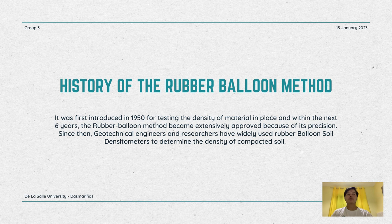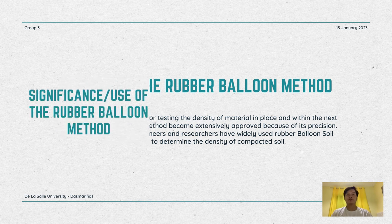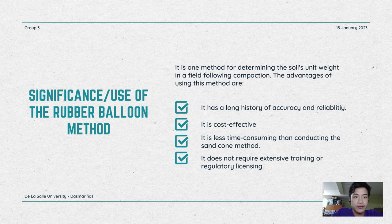It is one of the methods used to find the unit weight of soil in the field after compaction. The test is carried out with a rubber balloon filled with water and a calibration vessel. After compacting the soil in the field, a small hole is excavated. The weight of the soil excavated in the field is taken and the moisture content of the soil is found.